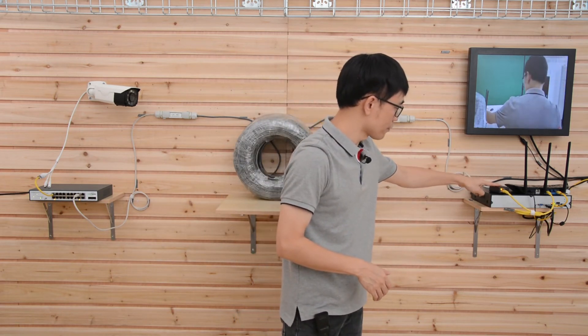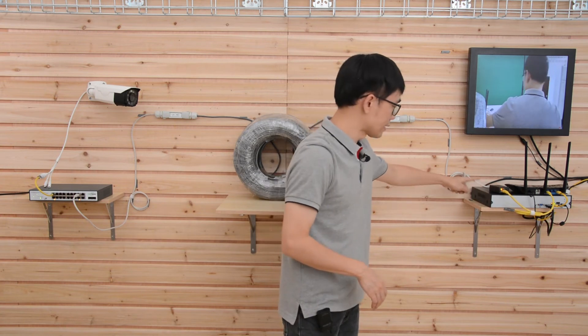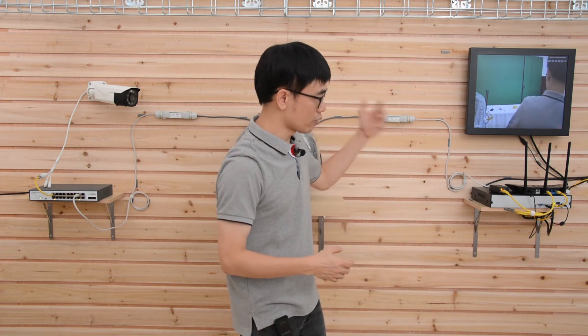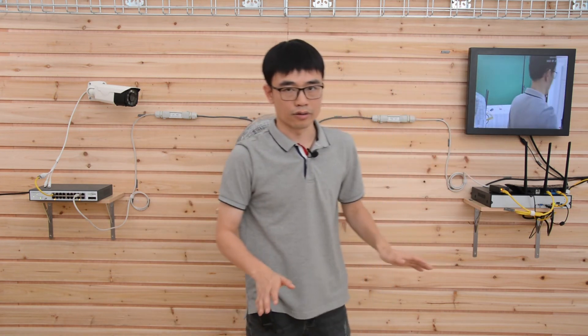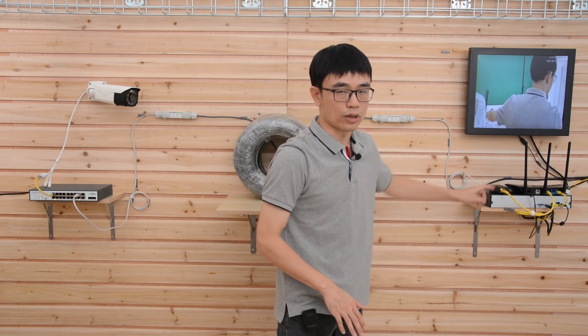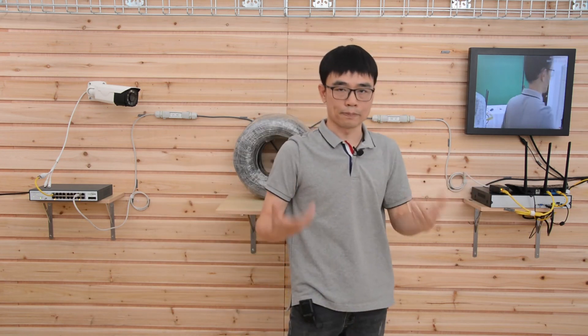If we just remove this PoE splitter and connect the cable directly to the router, the PoE switch will refuse to send the power because we know the router doesn't need the power at all. That's the reason why we need a PoE splitter at the end of this cable to help the whole system get the power up.